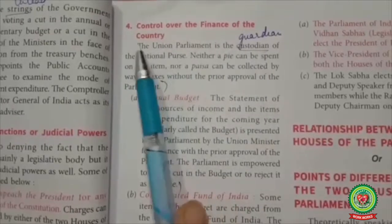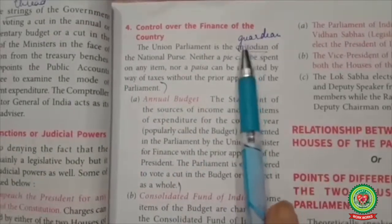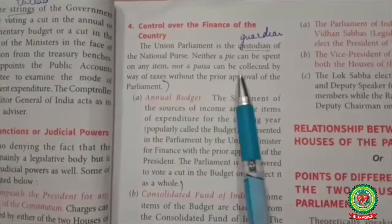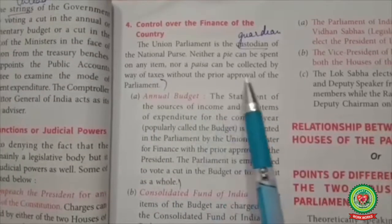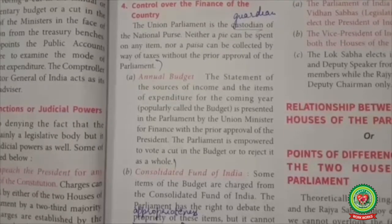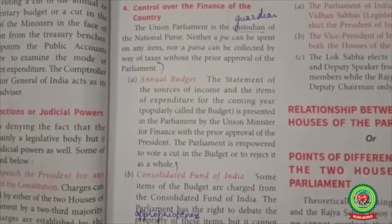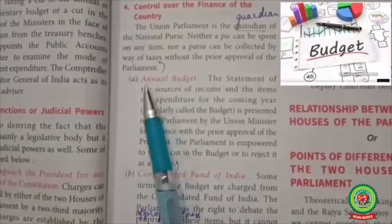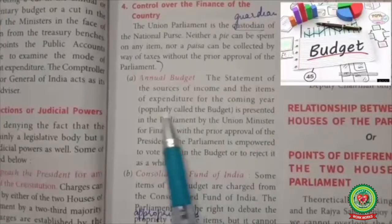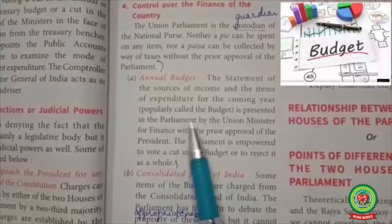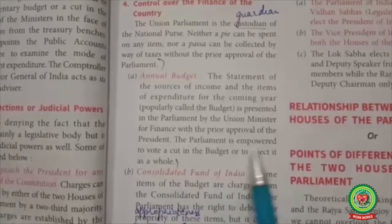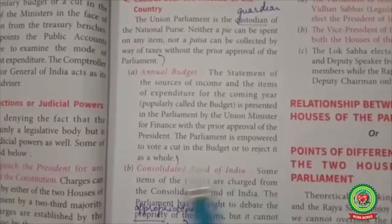4. Control over the Finance of the Country. The Union Parliament is the custodian (means guardian) of the national purse. Neither a pie can be spent on any item nor a paisa can be collected by way of taxes without the prior approval of Parliament. Annual Budget: The statement of sources of income and items of expenditure for the coming year, popularly called the Budget, is presented in Parliament by the Union Minister for Finance with the prior approval of the President. Parliament is empowered to vote a cut in the budget or to reject it as a whole.